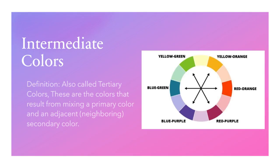Intermediate colors, also called tertiary colors, are the colors that result from mixing a primary color and an adjacent, neighboring secondary color. For example, yellow-green sits between yellow and green — those two are neighbors and they mix to make the one between. You'll note that they all have hyphenated names.